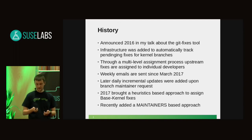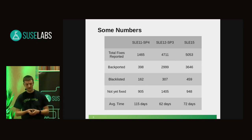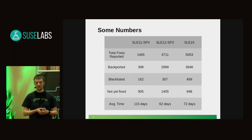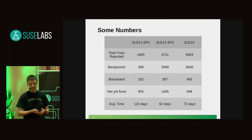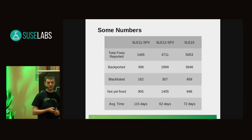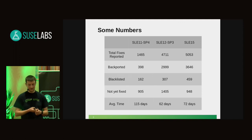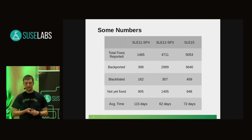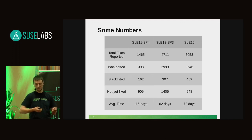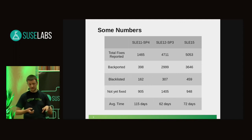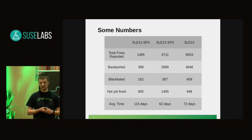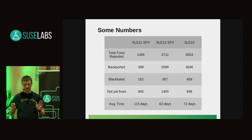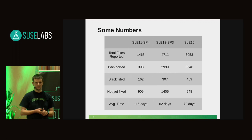How have you been doing with backporting the fixes? Some numbers for three selected branches: the best is SLE 15 where we have backported or blacklisted around 80% of the fixes that have been reported. SLE 12 SP3 is somewhere in the middle, and SLE 11 SP4 didn't get that much traction. On the bottom you can see the average time it takes from when a patch is added to the list until it actually appears in the branch. Given that emails are sent out weekly for base kernel updates, there is a base delay of at least one or two weeks.